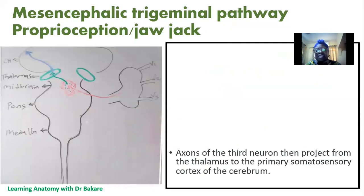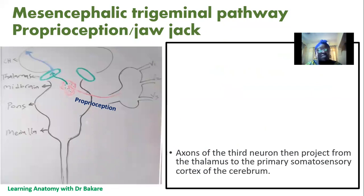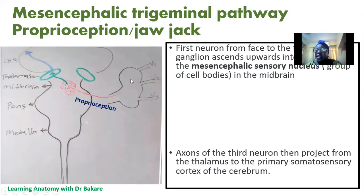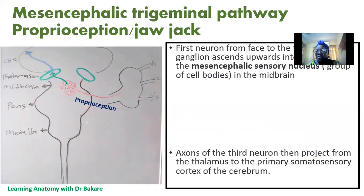Let's look at the mesencephalic trigeminal pathway. This pathway carries proprioception and jaw jerk — the sense of change in position and movement of regions around the face. Neurons, whether from the upper, mid, or lower face, pick up proprioceptive or jaw jerk stimuli and run through the trigeminal ganglion.